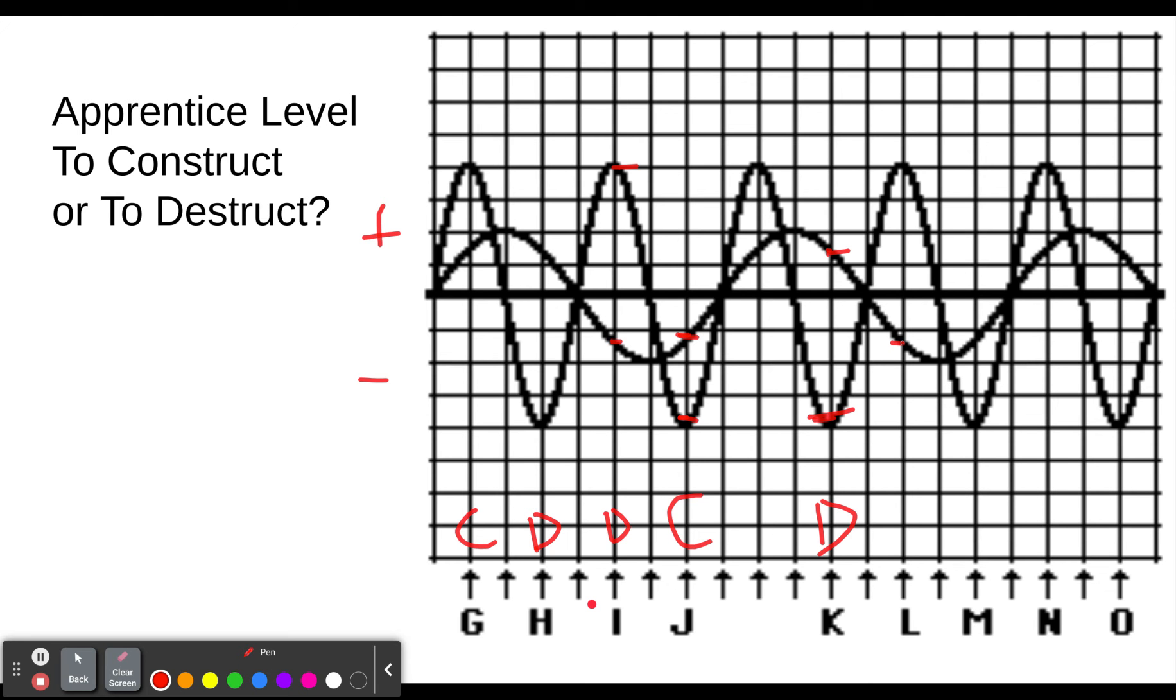Here we see a negative push and a positive push. That's destructive. Here we see a negative and a negative, they're both pushing the same way, so that's constructive. At N, we see positive and positive, so that's constructive. And finally, at O, they're pushing opposite directions again, so that's destructive.